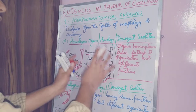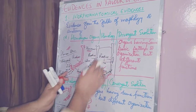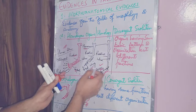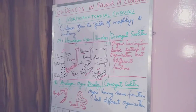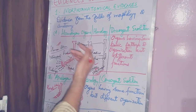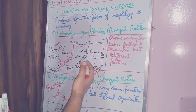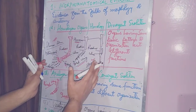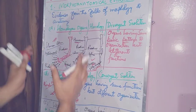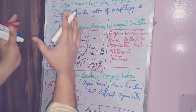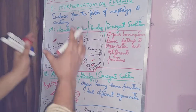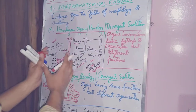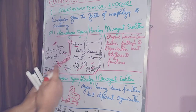In the horse forelimbs also the bones are the same — humerus, radius, ulna, carpals, metacarpals, and phalanges — with a bit of difference, but the bones are the same.